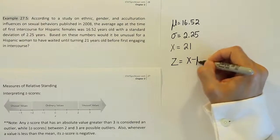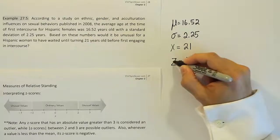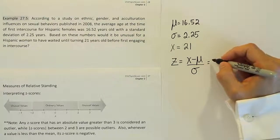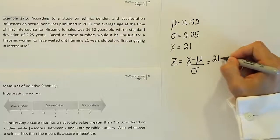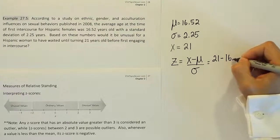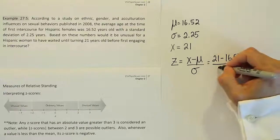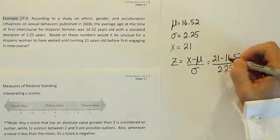It's x minus the mean over sigma. x minus the mean over sigma. In this particular problem, the x value is 21. The mean is 16.52. I'm going to divide that by 2.25.